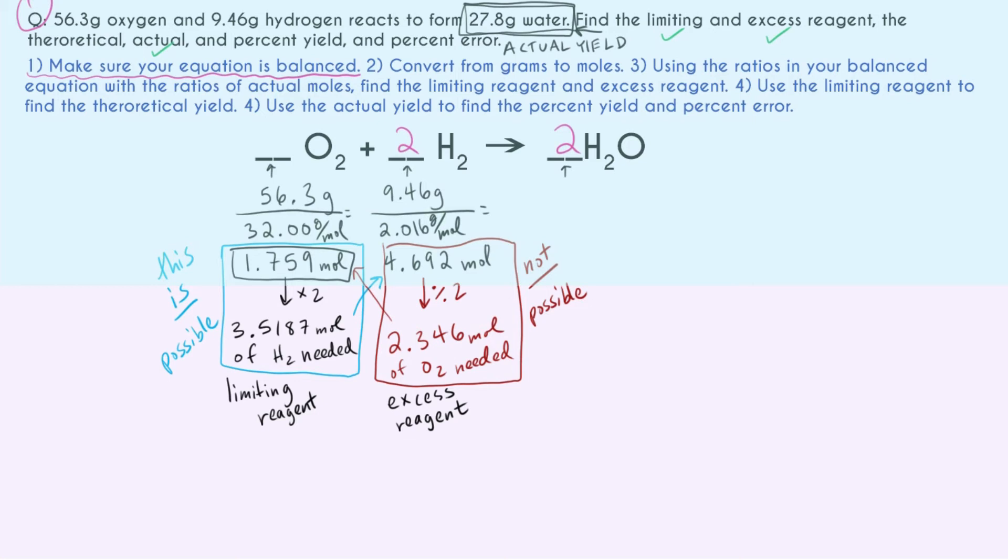We have the actual yield. And you always just have to be told the actual yield. And just to get into the actual yield for a second, the reason why a lot of problems have it is because in real life, this wouldn't just be a word problem you're doing on a test or homework. This would be something you did in lab. And when you're in lab and you're actually mixing these chemicals, you just can't get a perfect reaction. You're always gonna lose a little bit.